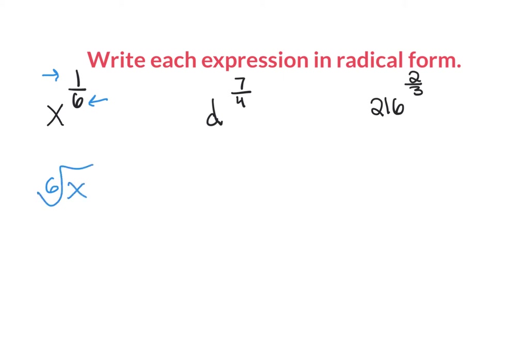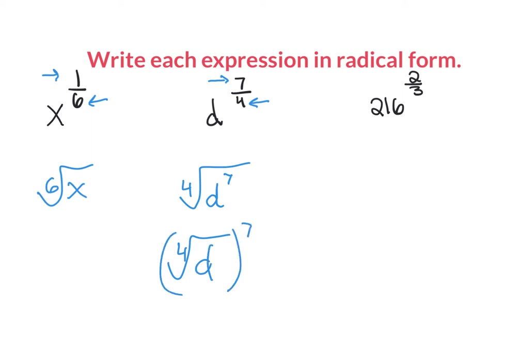The next one: the denominator is my root and the top is the extra exponent. So this is the fourth root of d to the power of 7, or equivalently, the fourth root of d with the whole thing raised to the power of 7.